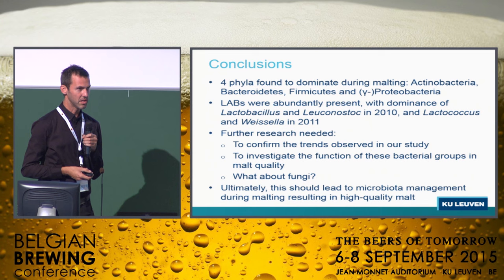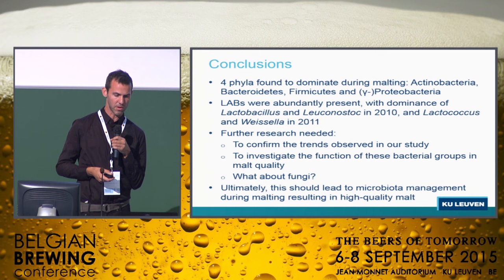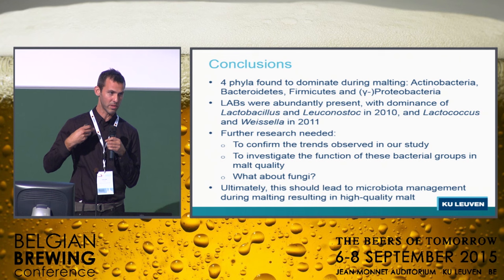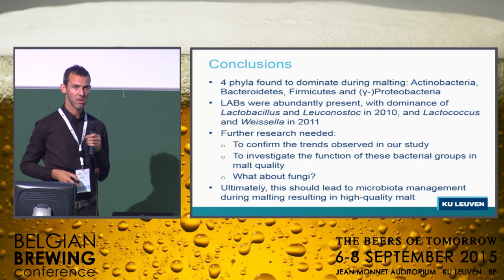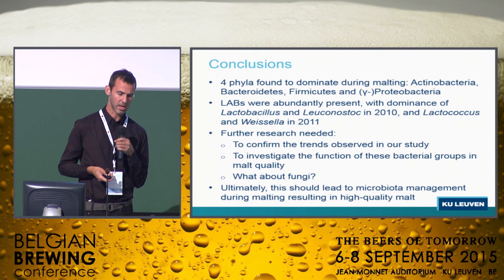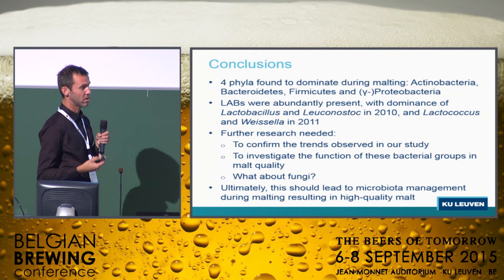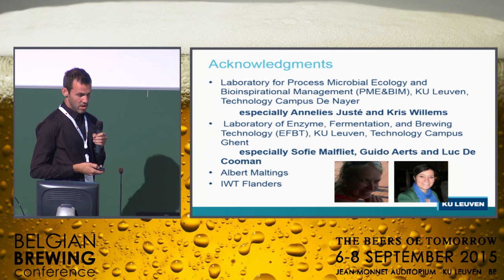Further research is still needed to confirm the trends observed. This was a descriptive study — the next question is: what are these microbes doing in the process? What are their functions? We also focused only on bacteria — what about fungi, and how important are fungi in this kind of process? By bringing it all together, I believe this can lead to better microbiota management during malting, resulting in high quality malt.